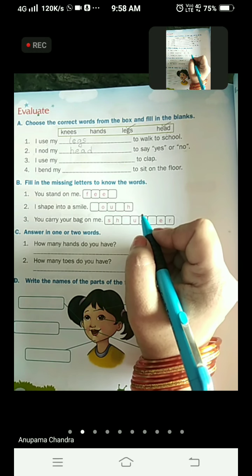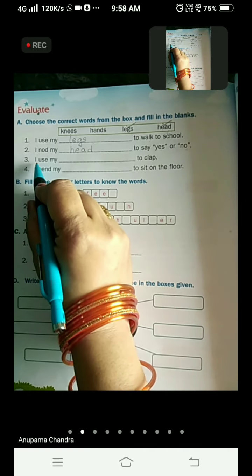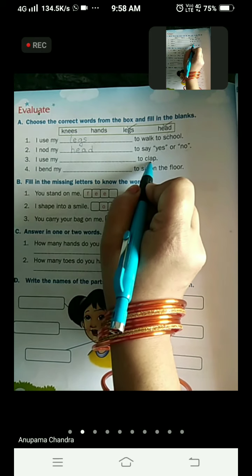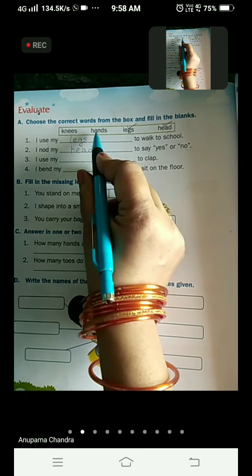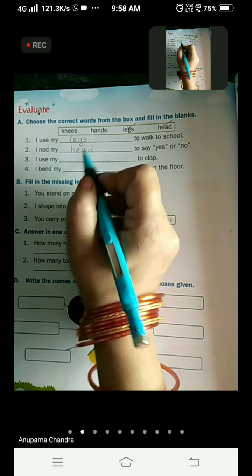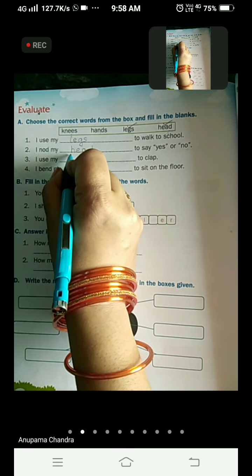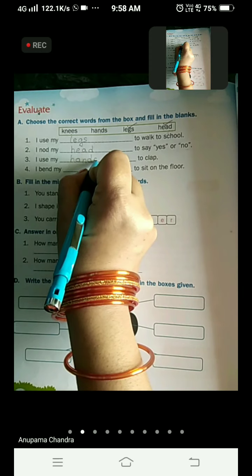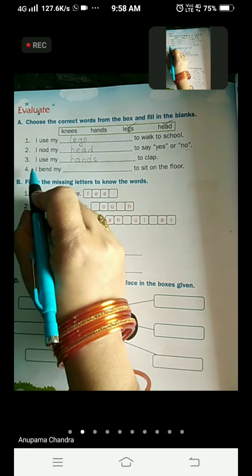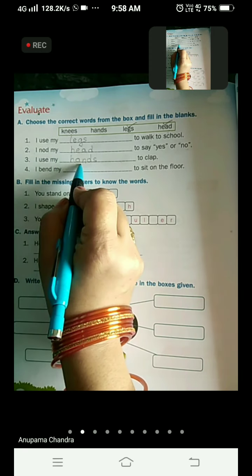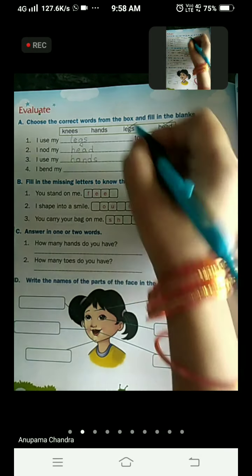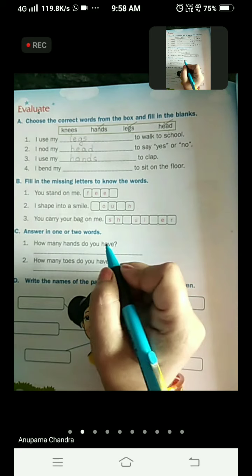Now come to the third one. I use my dash to clap. We use our hands to clap. So we are going to write here hands. H A N D S hands. I use my hands to clap. And put the tick mark over hands.